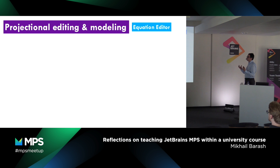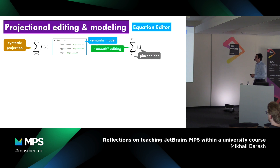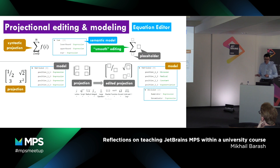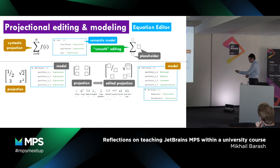Now, how to introduce modeling within projectional editing. We refer to Microsoft Word's Equation Editor. I want to get a certain expression — what's behind this projection? Essentially some kind of object. It's a sum, so it has three properties that are essentially children in the MPS context: lower bound, upper bound, and expression, all of type expression. To get that projection I start with a semantic model with four placeholders, each of type expression, and then fill them with division, radical, constant, and exponentiation — which should be sub-concepts of expression.